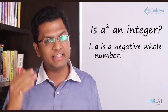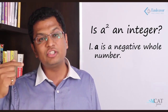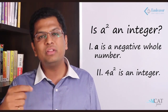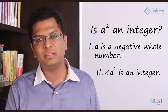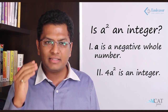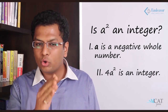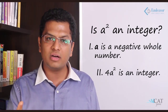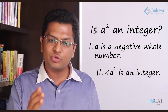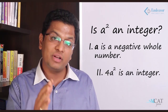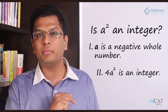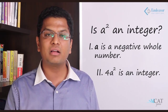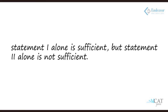Now we also have to check statement two. Statement two says: '4a² is an integer.' Many of us would quickly say this is sufficient, but let's go back to number theory. Can a be one-half? Half squared is 1/4, and 4 × 1/4 = 1, which is an integer. So 4a² being an integer does not guarantee that a² is an integer — a may not be an integer itself. Hence, statement two alone is not sufficient, and we mark option A.